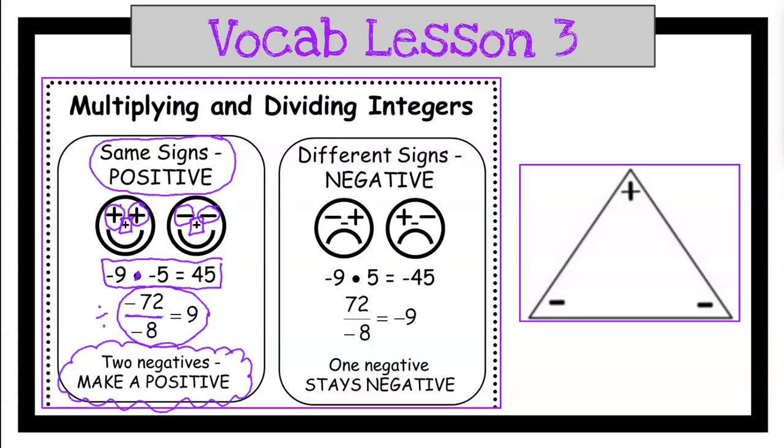Same signs gives you a positive answer, and then different signs gives you a negative answer. So if you have a negative times a positive, it's a negative. And if you have a positive times a negative, it's a negative. Here we have negative 9 times positive 5 is negative 45, and then positive 72 divided by negative 8 equals negative 9.